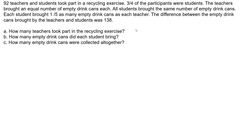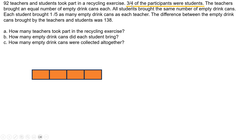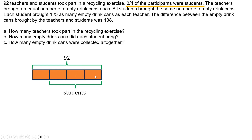Now the second statement: 3/4 of the participants were students. Let's draw a model for this. 3/4 of the participants were students, which means there are a total of 4 parts. We have drawn 4 units here, so a total of 4 units represents both teachers and students, and out of which 3 of them are students. So these 3 units belong to students, and all together the 4 units is equal to 92, because there are 92 teachers and students. Out of these, 3 parts belong to students.